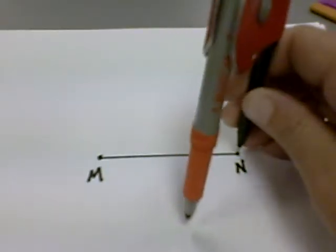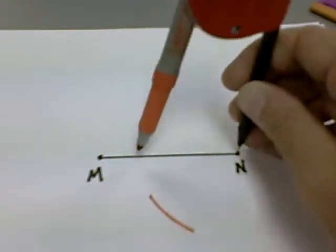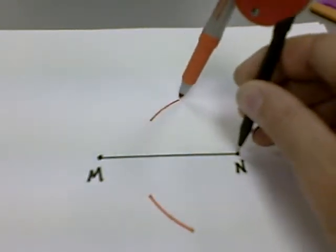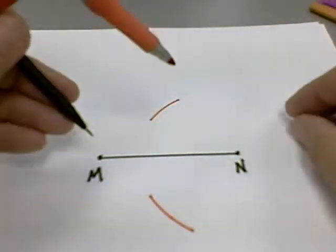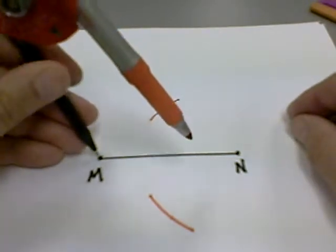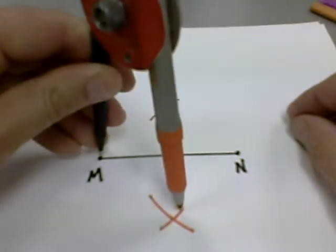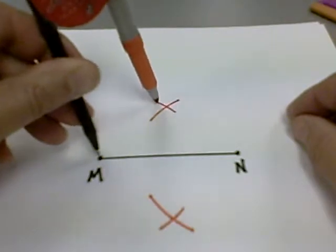At that point, I'm going to strike an arc below and above the segment, then repeat the process from the other endpoint, in this case M, and strike arcs above and below, creating intersections.